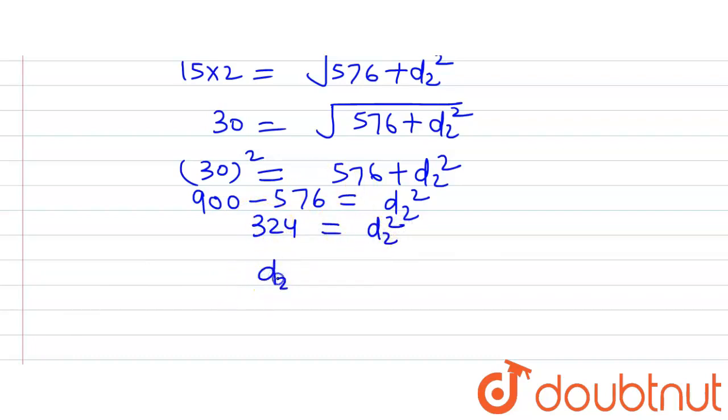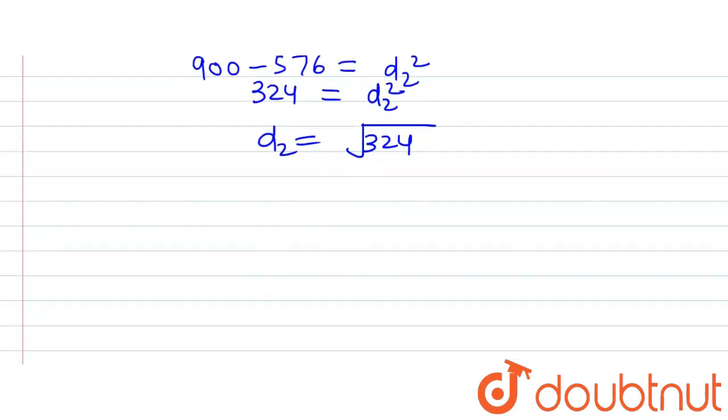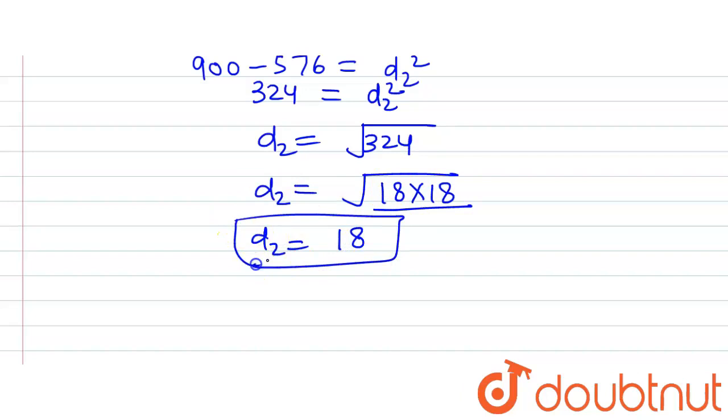Now the square will go to the other side of the equation and we will have D2 equals the square root of 324. Now 324 can be written as 18 multiplied by 18. So from this square root, 18 will come out because 18 is forming a pair. That means the length of the other diagonal is 18.